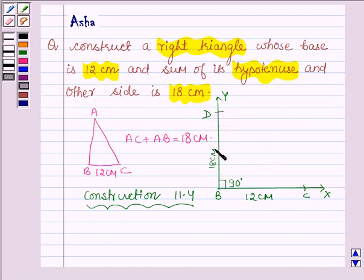Now we shall find the perpendicular bisector of line DC such that it intersects the line segment BD at a point A. So let this perpendicular bisector be PQ and in the last step we shall join A to C to get the required triangle.